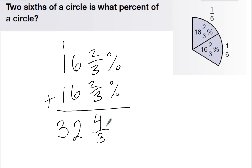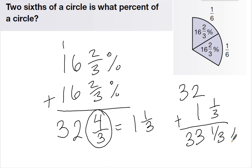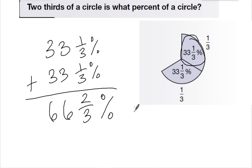Now we don't really like improper fractions. So I know that 4 thirds is the same as 1 and 1 third. So I can take 32 and add 1 and 1 third to it to get 33 and 1 third percent. Which, if you notice from the last problem, is how much 1 third equals.